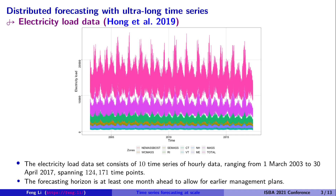We will show an example with electricity load data. The electricity load data consists of 10 different time series of hourly data ranging from March 1st, 2003 to April 2017, spanning 124 thousand time points. The forecasting horizon is at least one month ahead to allow for earlier management plans.